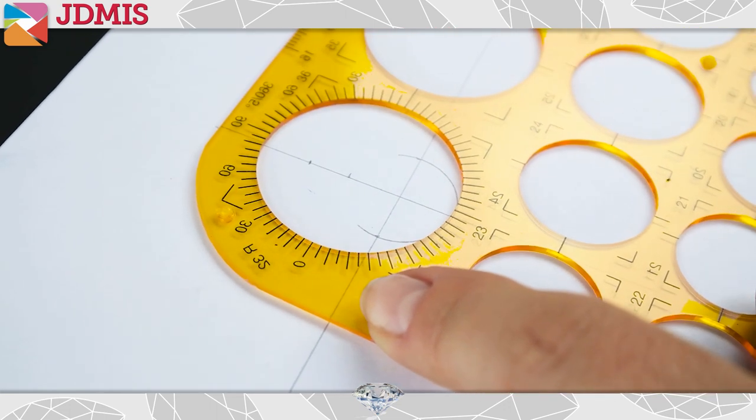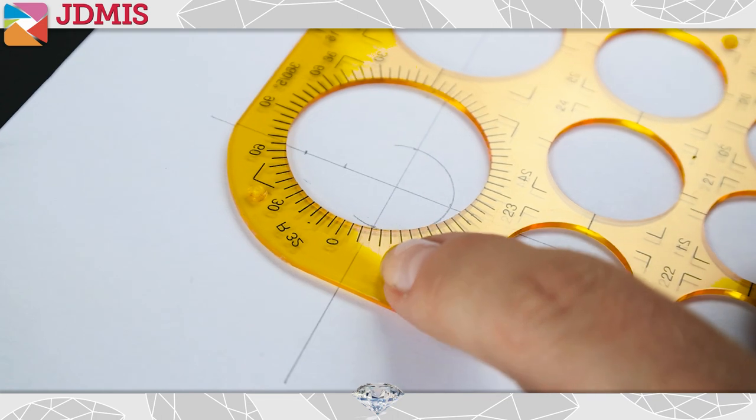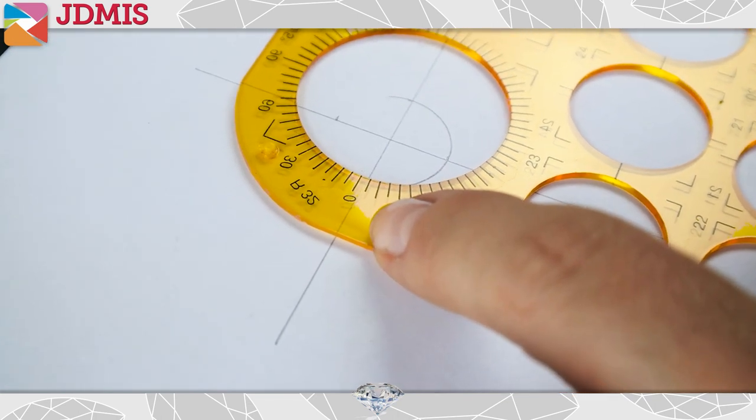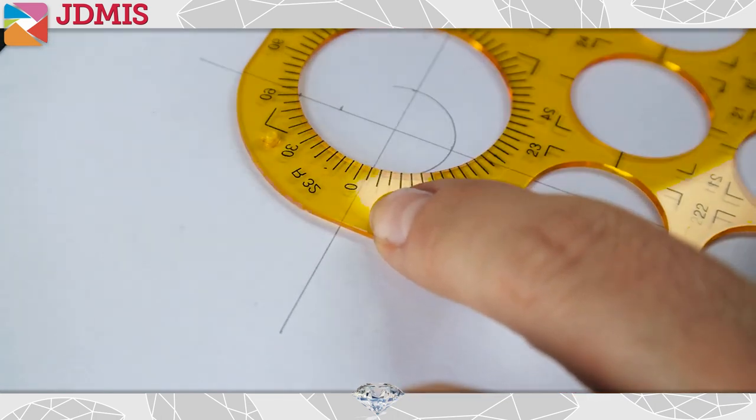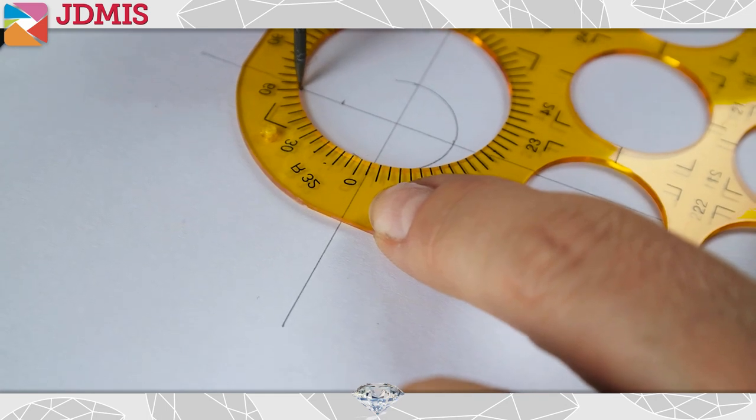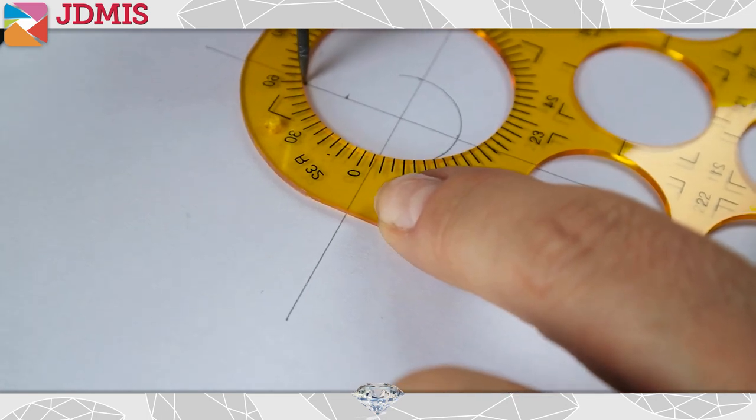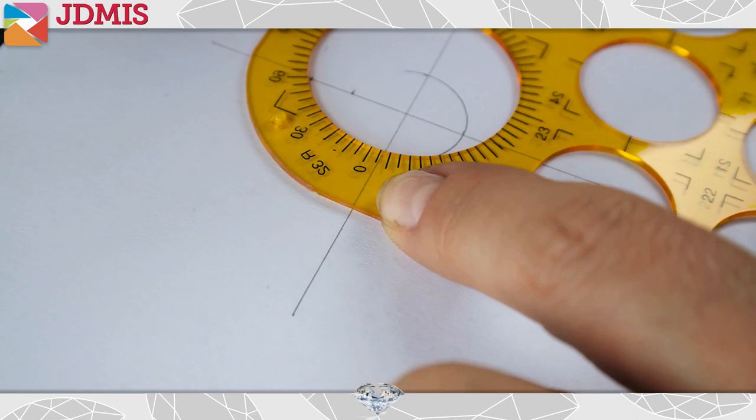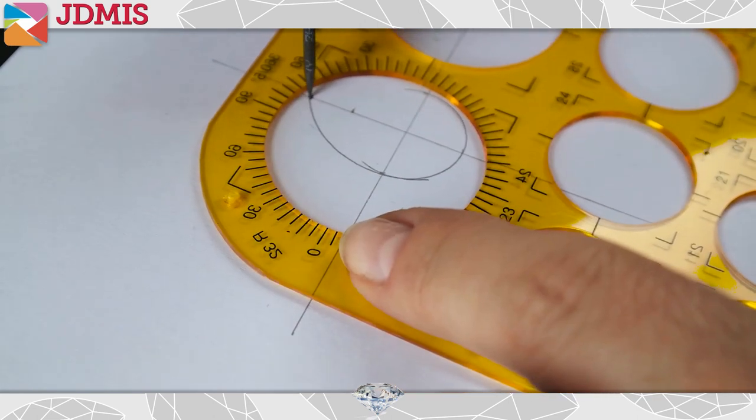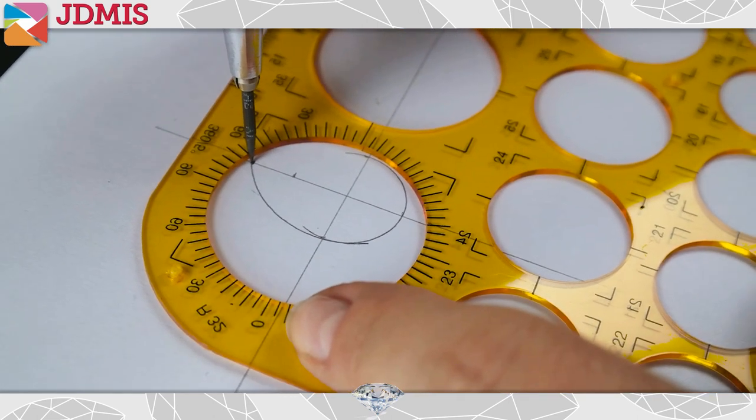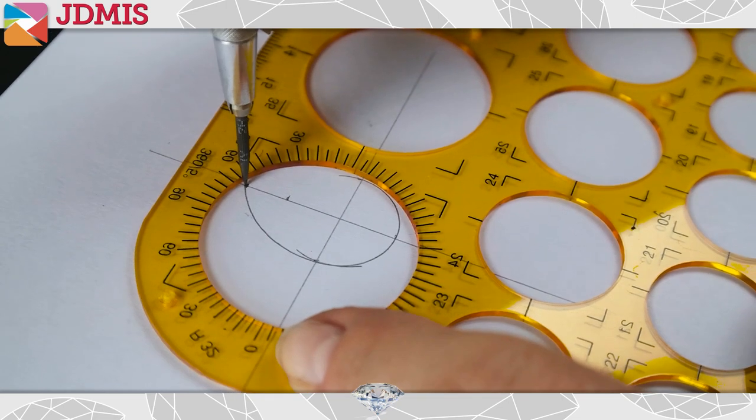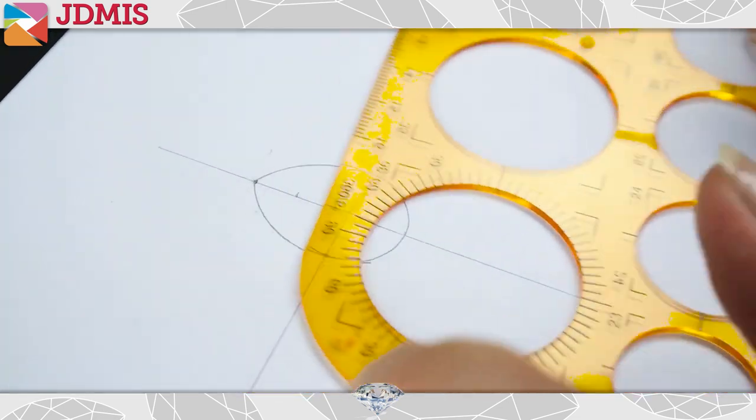Then we can finish off the shape using one of the larger round templates, so as to get a nice, smooth, beautiful wing on the pear shape. Once this is done, we're then going to need to start thinking about the facets.